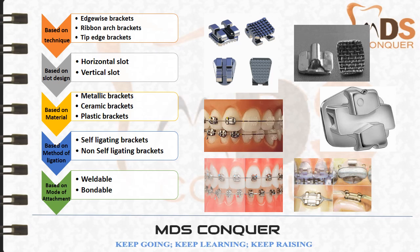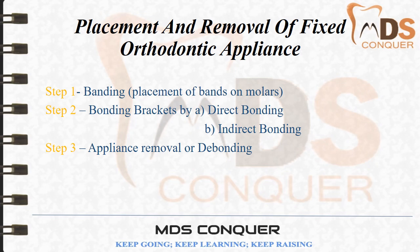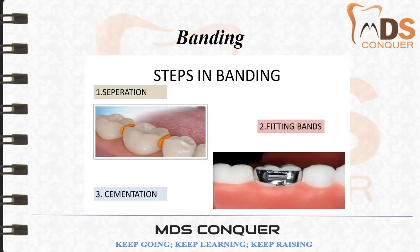The placement and removal of fixed orthodontic appliances is a stepwise procedure. The first step is banding — placement of bands on molars. The second is bonding of brackets, either by direct or indirect bonding. The third step is appliance removal or debonding. Banding involves three basic steps: separation or creation of space, fitting the band of appropriate size, and cementation.